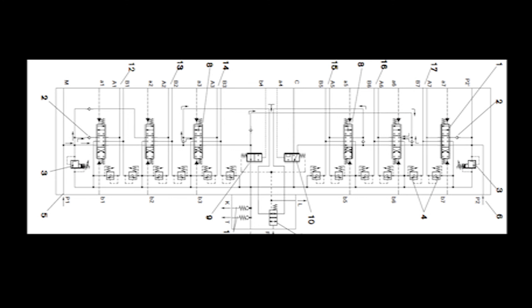Primary valves available: pressure relief valve pilot-operated without anti-cavitation, pressure control; anti-cavitation valve pilot-operated, pressure control; anti-cavitation valve pilot-operated with pressure isolation stage; pressure relief valve pilot-operated with pressure isolation stage. Secondary valves available: pressure relief valve pilot-operated without anti-cavitation, pressure control; anti-cavitation valve pilot-operated; anti-cavitation valve; pressure relief valve with pressure isolation stage off; pressure relief valve with pressure isolation stage on.